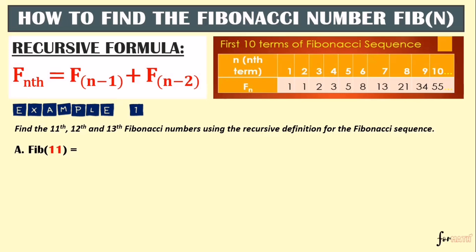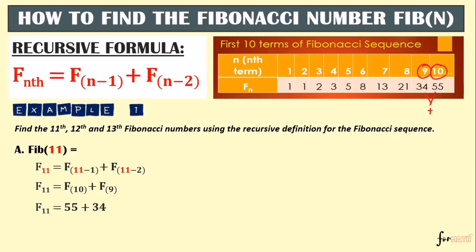To get the 11th term using the recursive formula, we need the two previous terms. Using the formula: F(11-1) is the 10th term, and F(11-2) is the 9th term. So we need the 10th and 9th terms of the Fibonacci sequence. From the given first 10 terms, we add 55 + 34, so the 11th term is 89.